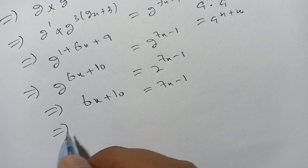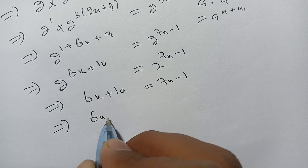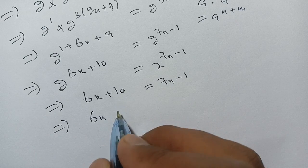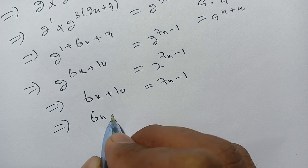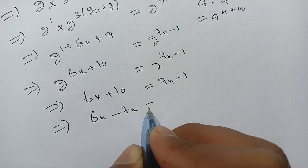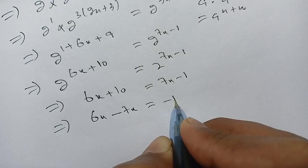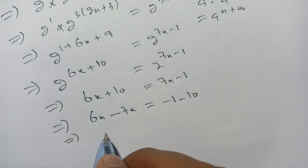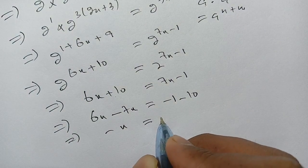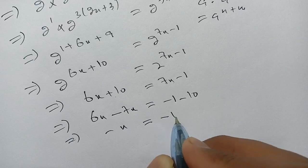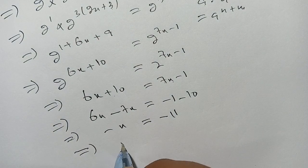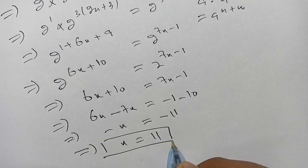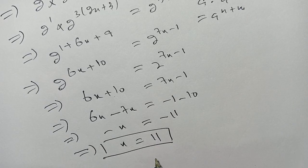We write 6x, then shift 7x to the left hand side to get 6x - 7x = -1 - 10. This becomes -x = -11, which implies x = 11. x = 11 is our solution.